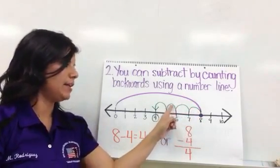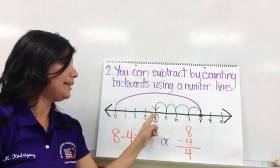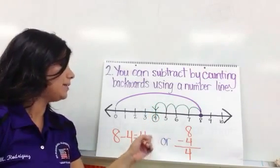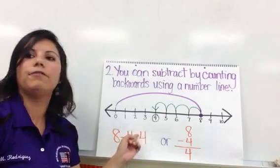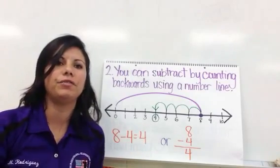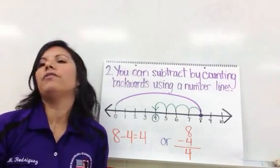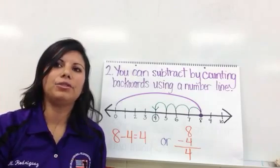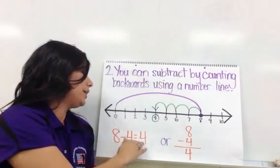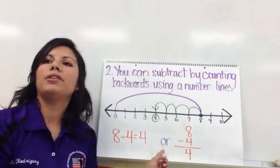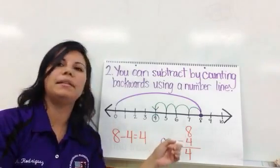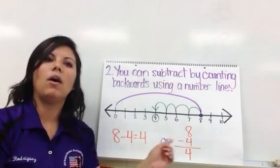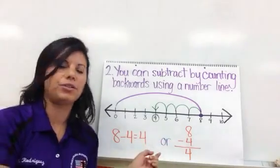then jumping 7, 6, 5, 4. I stop there because I subtracted 4, so my answer is also 4. There are two different ways to write it: side to side, left to right — 8 minus 4 equals 4; or up and down vertically — 8 minus 4 equals 4. Both of these are the same and correct answer.